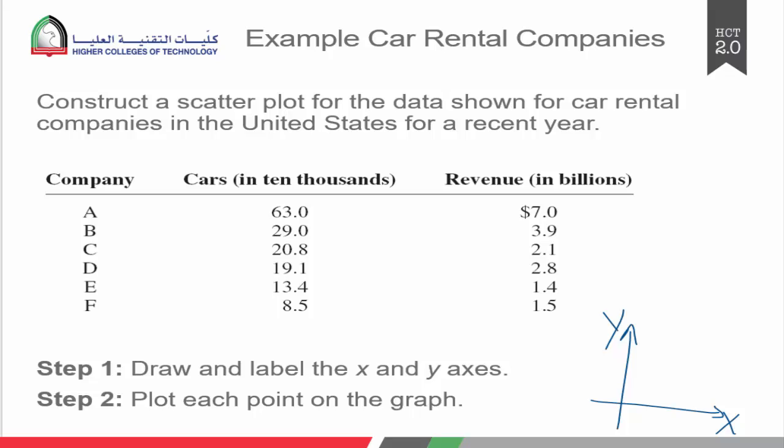Do we first rent out cars and then we earn revenue? Or do we first earn revenue and then we're renting out cars? So what is the predictor? What is the response?